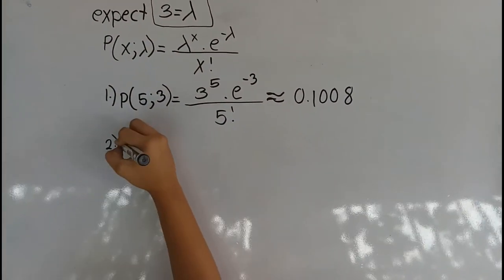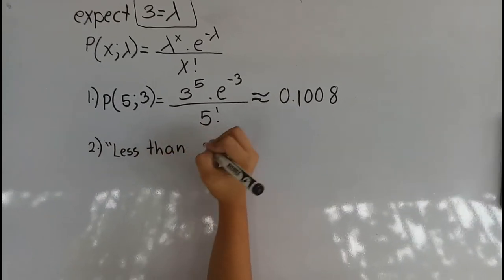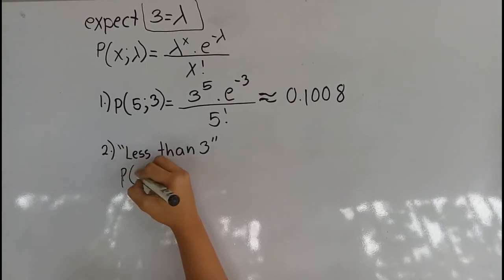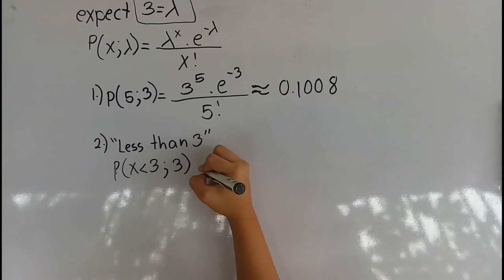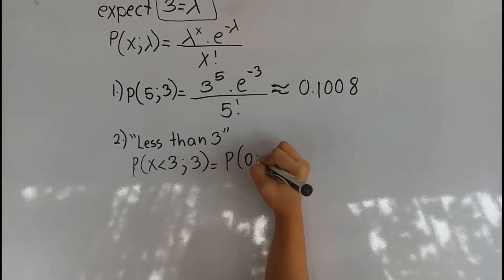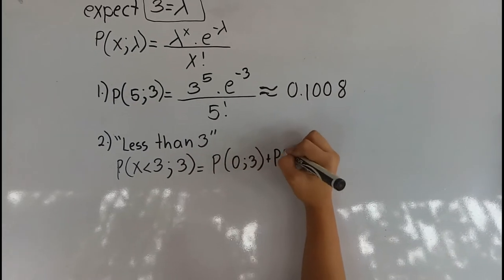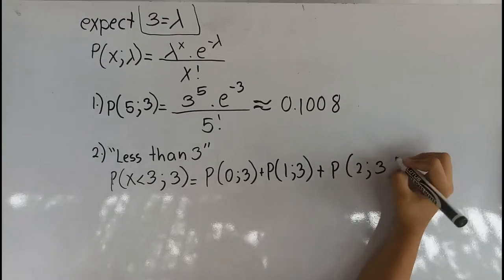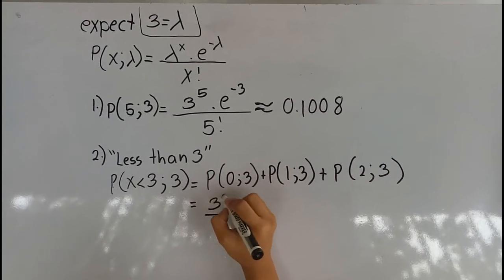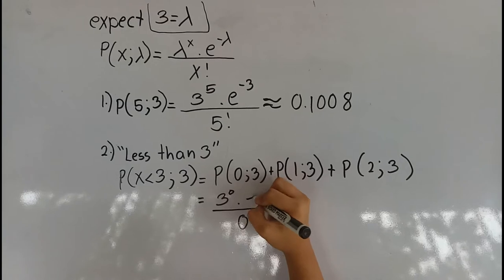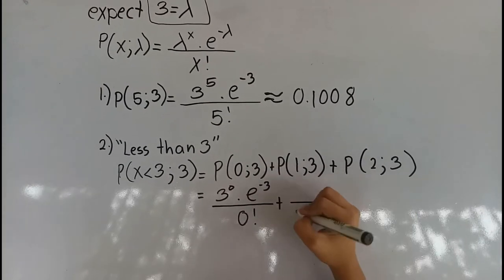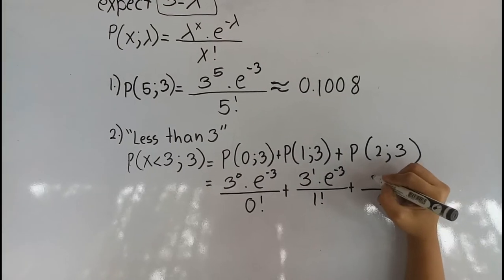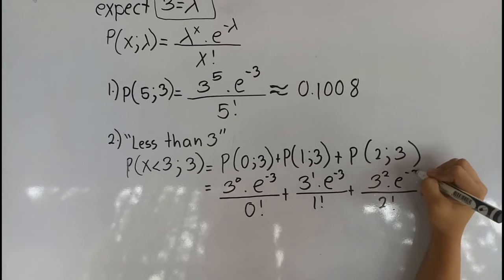Number 2: less than 3. The probability of x less than 3, given lambda equals 3, is equal to the probability of 0 given 3, plus the probability of 1 given 3, plus the probability of 2 given 3. This equals 3 raised to 0 times e raised to negative 3, all over 0 factorial, plus 3 raised to 1 times e raised to negative 3, all over 1 factorial, plus 3 raised to 2 times e raised to negative 3, all over 2 factorial.